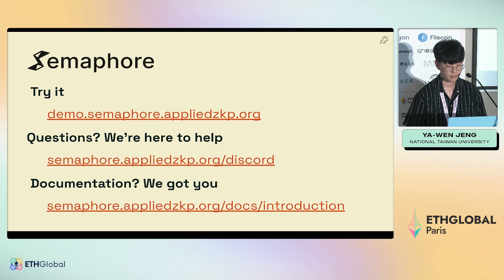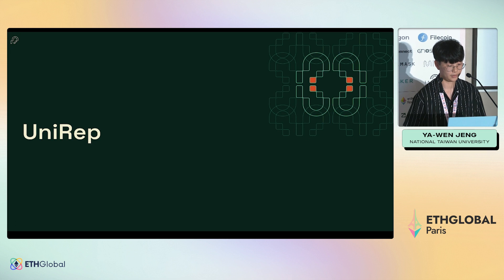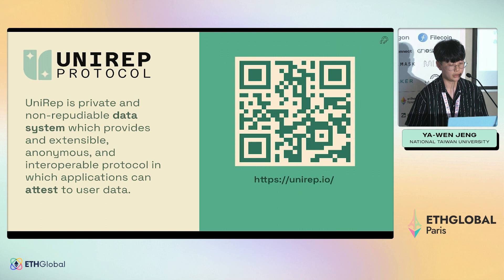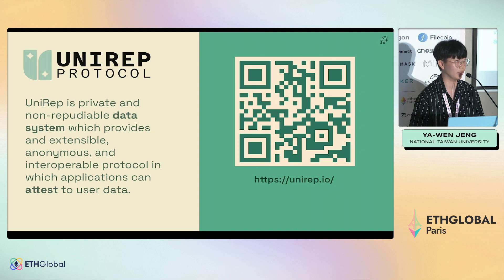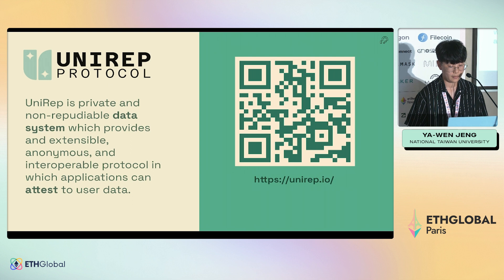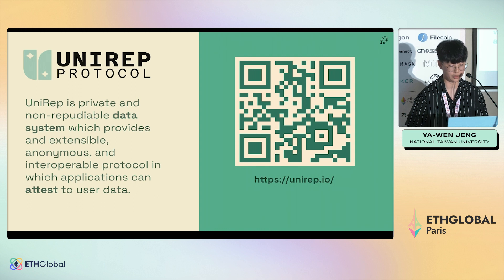There is documentation available. The second project is called UNIREP. UNIREP is a private and non-reputable data system that provides anonymity to users, while at the same time allowing the user to prove how much data they have. You can go to unirep.io to see the documentation.